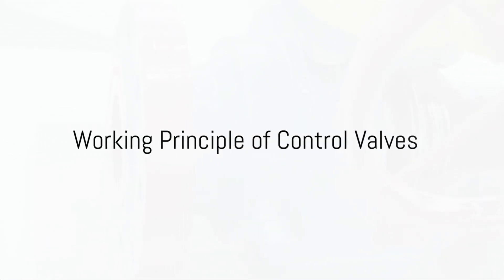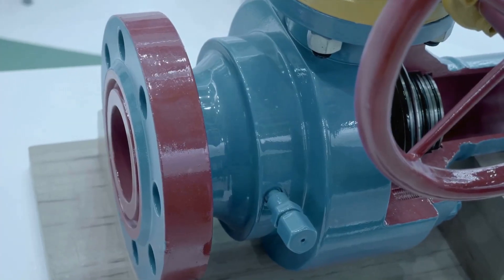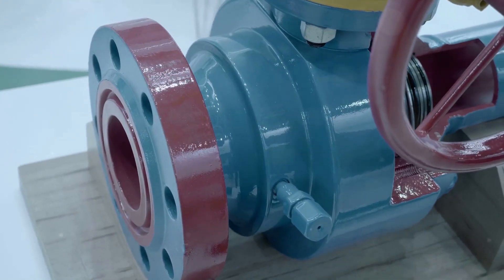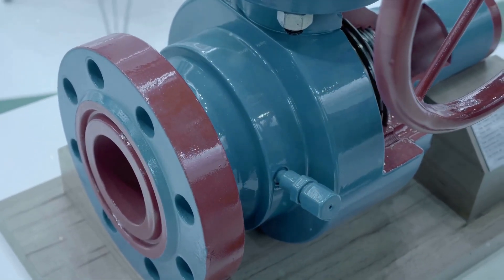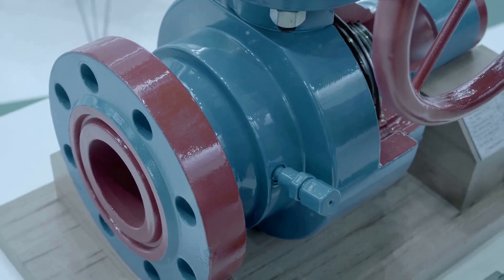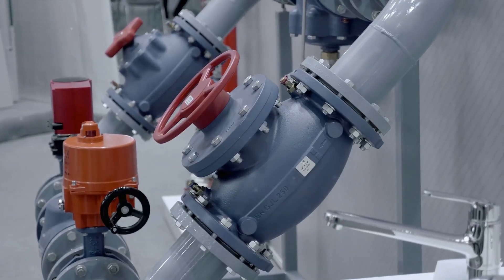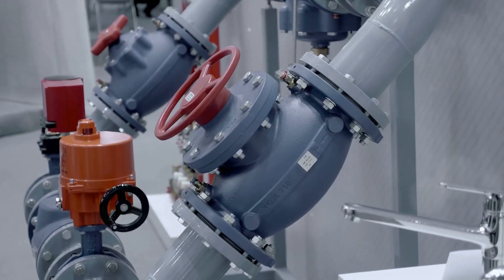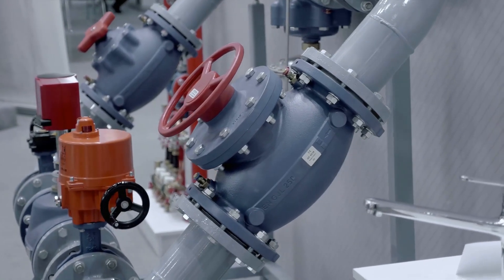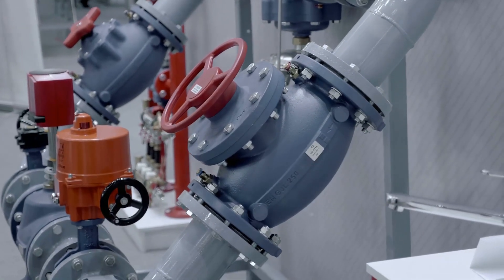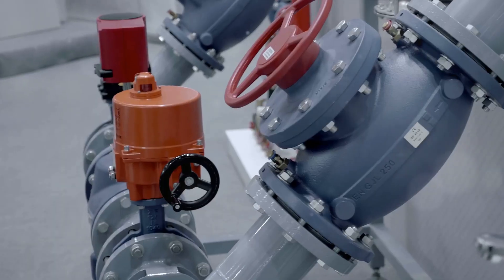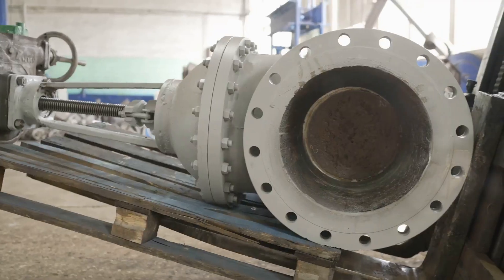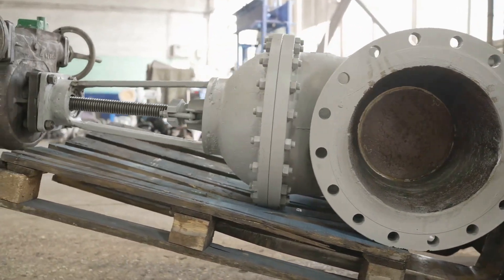Could you explain the working principle behind a control valve? Sure. Essentially, these devices operate by changing the size of the flow passage within the valve. This is done by adjusting the position of a movable element within the valve body. This movable element can take different forms, like a plug or a ball, depending on the type of valve. Imagine the valve as a door that can be opened or closed to varying degrees.